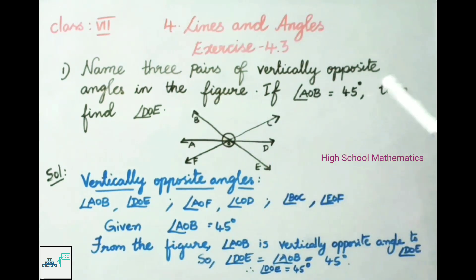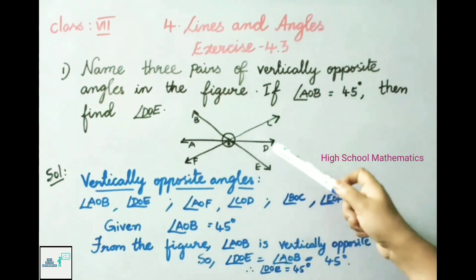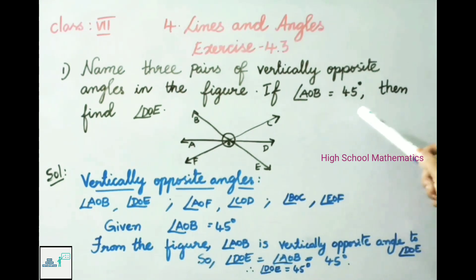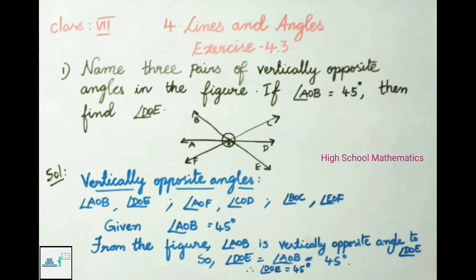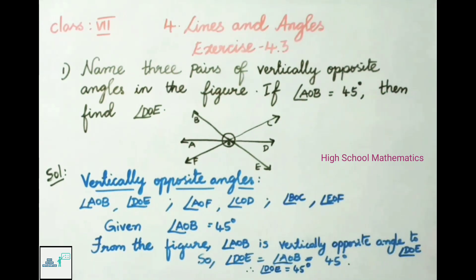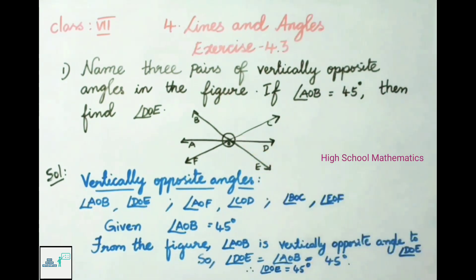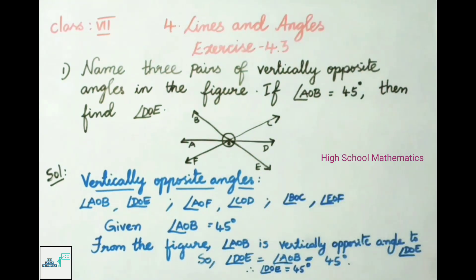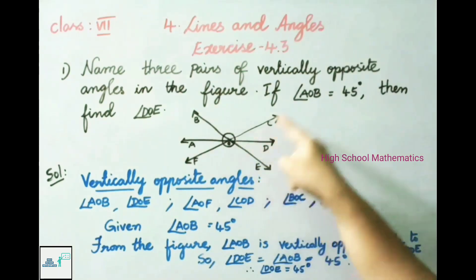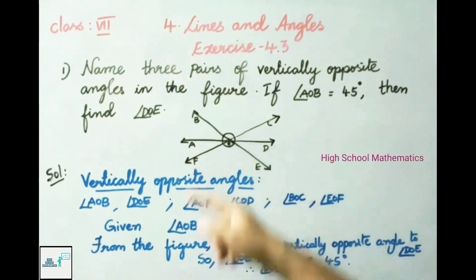Name 3 pairs of vertically opposite angles in the figure. If angle AOB is equal to 45 degrees, then find angle DOE. The vertically opposite angle pairs are: angle AOB and angle DOE, angle AOF and angle COD, and angle BOC and angle EOF.